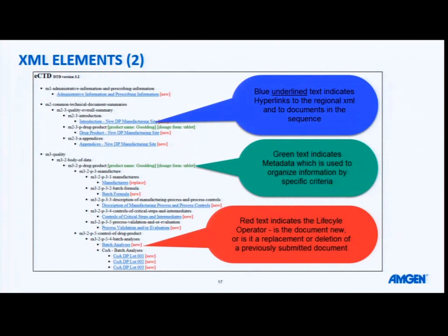Blue underlined text indicates a hyperlink on your XML. This is how you navigate to the documents you're submitting as part of your sequence. You click on them, they will bring up the PDF of that section that you've clicked on, and then you can use your back button in Internet Explorer to return to the XML. Some of that naming follows ICH conventions, but there is the opportunity to customise that language and text. You can add information such as an introduction of a new drug product manufacturing site.